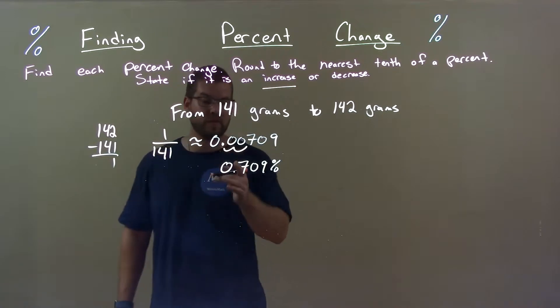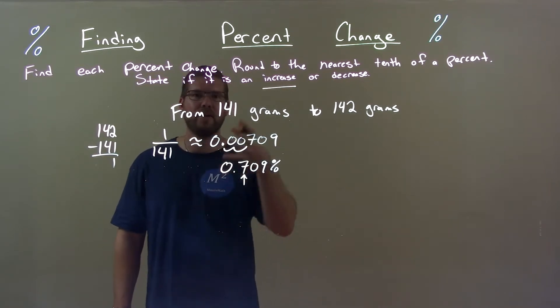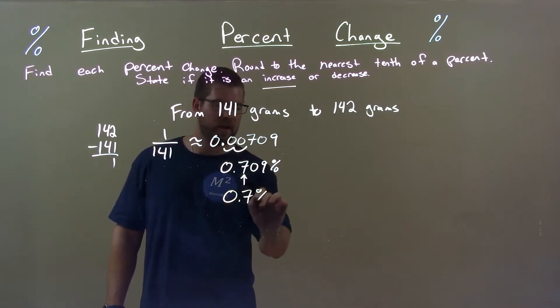So this is 0.7 percent roughly, right? We'll take the seven, we look to the right, we got a zero. Zero causes the seven to stay where it is. 0.7 percent.